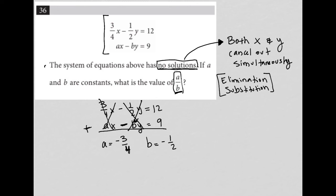So here is the a that I need to have, and here's the b. The question is asking what is a over b. That's going to be negative three-fourths over negative one-half.